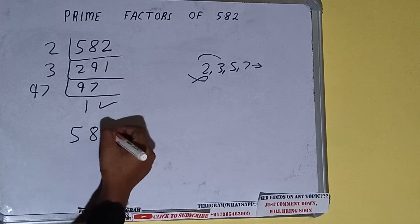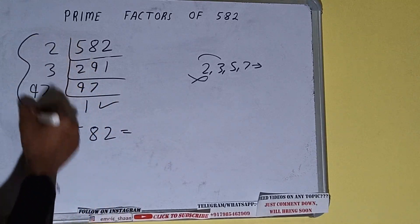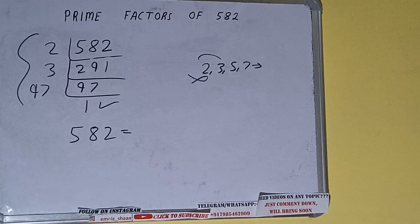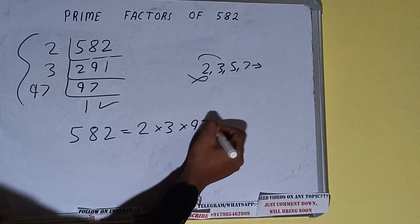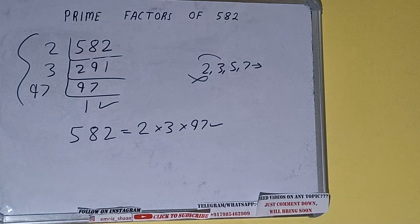We do one last thing: prime factors of 582 equals to multiply whatever we have on the left-hand side, that is 2 × 3 × 97. That will be the answer. So this is all about prime factors of 582.